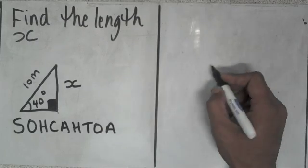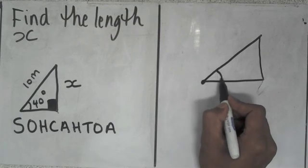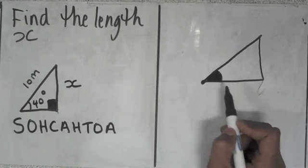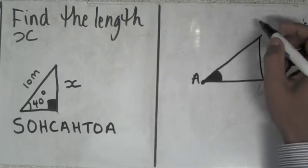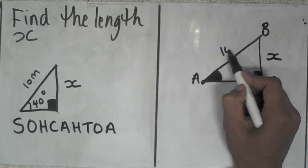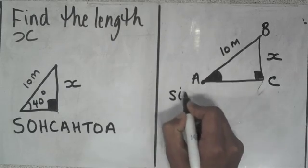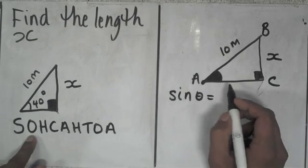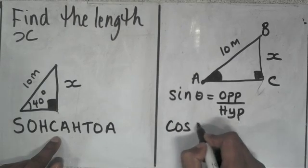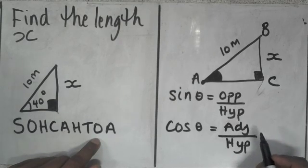You should understand that whenever you have a triangle, you have to ask yourself which side you're working out and which angle you're positioning yourself at. So on this triangle, I've got points A, B, and C, with a right angle here. I'm trying to find what x is, and I've got 10 meters. So what formula am I going to use to work out the missing side? The three formulas are: sin theta, cos theta, and tan theta.